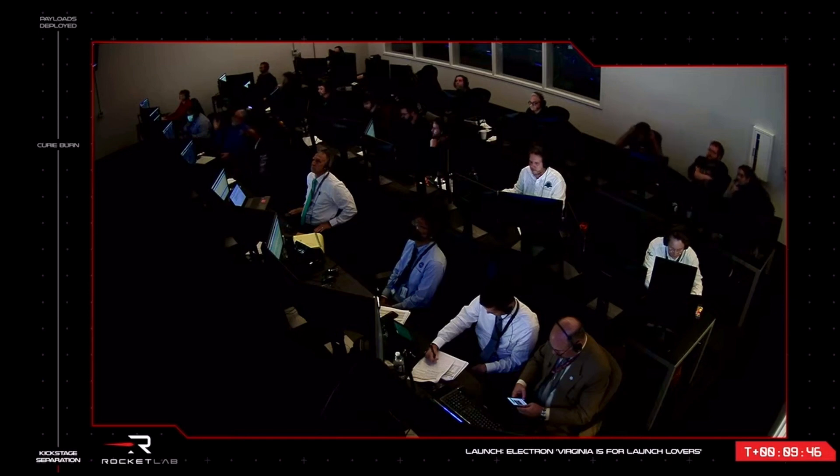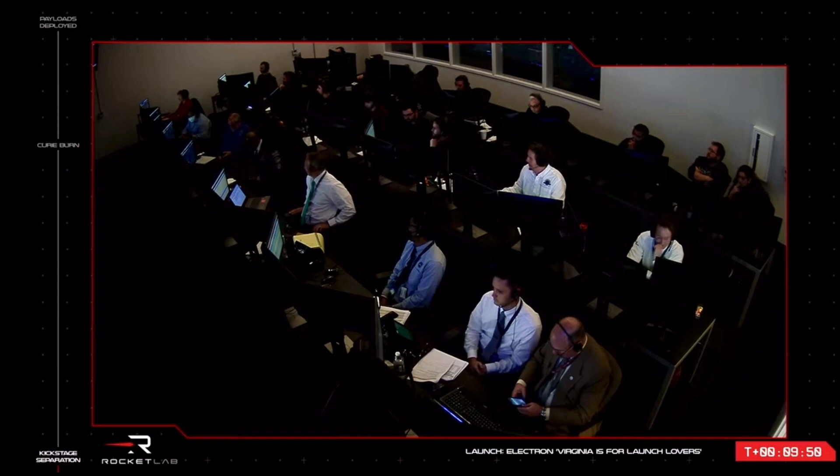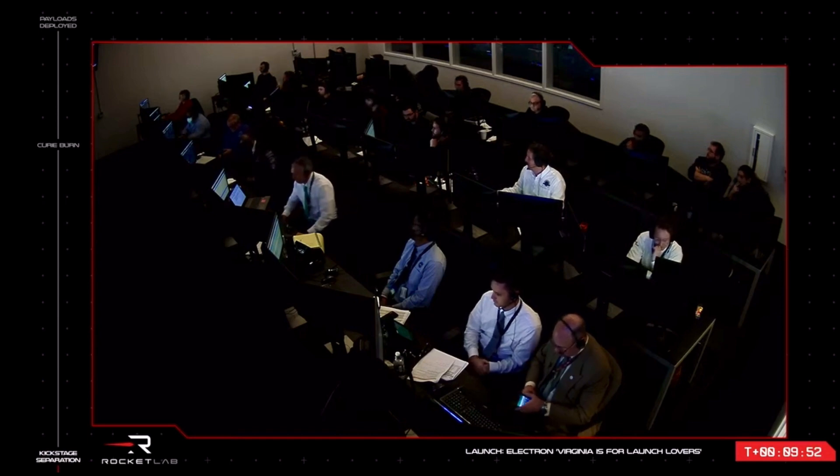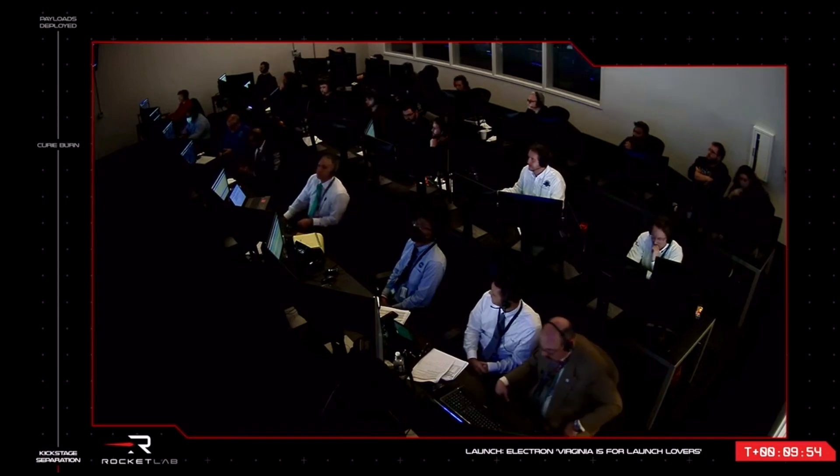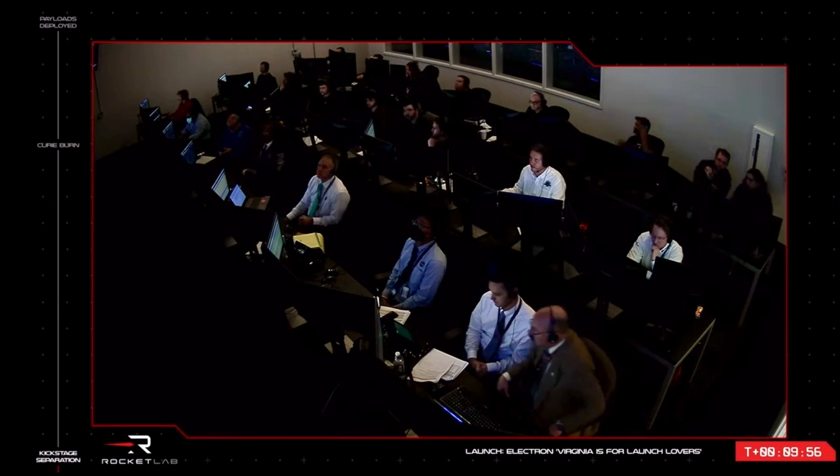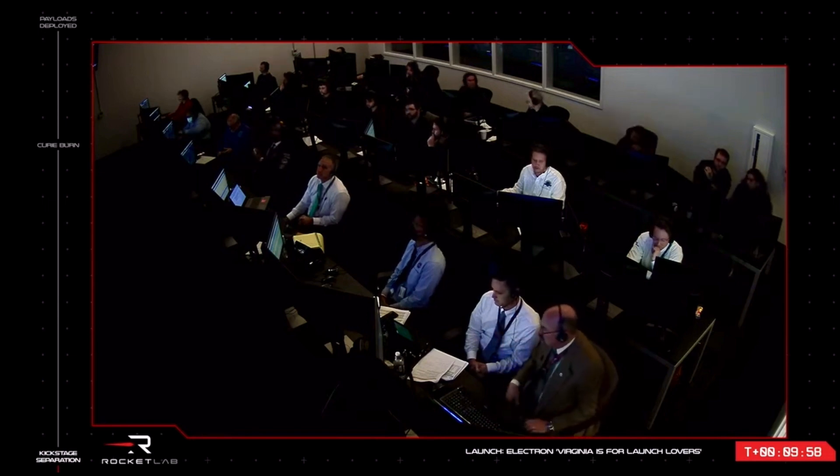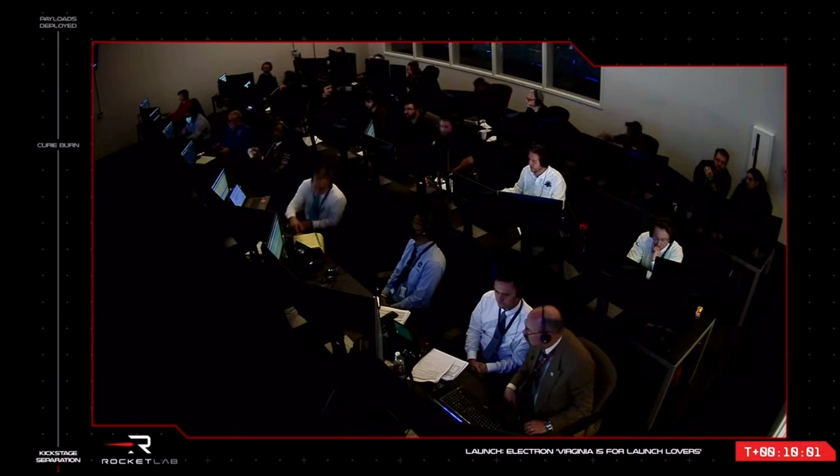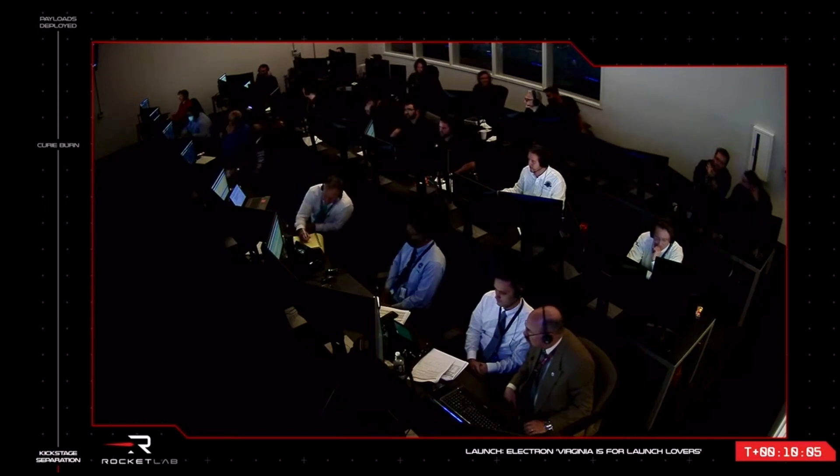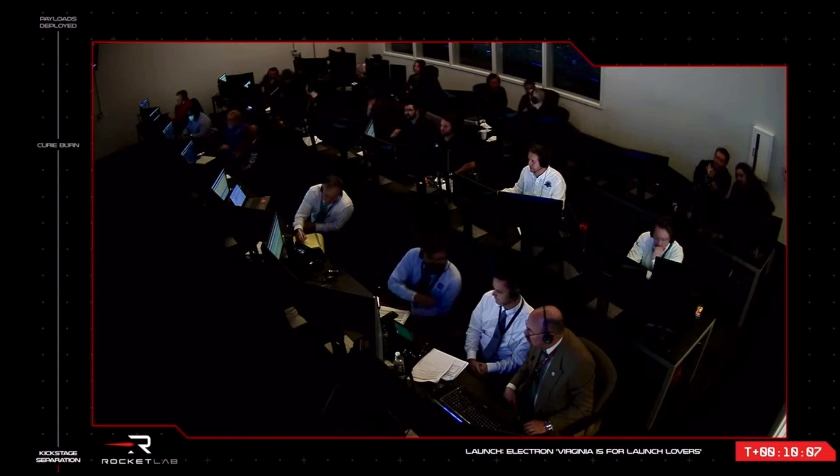The kick stage separated into an elliptical orbit of Earth and will take the next 43 minutes or so to bring itself back around to the mission's nominal altitude of 550 kilometers. As it comes back close to that altitude, the engine on our kick stage called Curie will light up and propel the kick stage and the payloads into a circular orbit at that same 550 kilometer altitude.